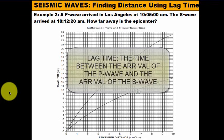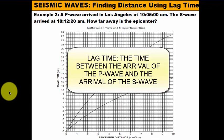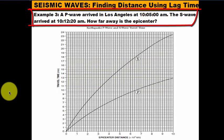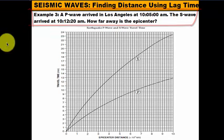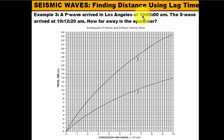Looking at example 3, it says the P-wave arrived in Los Angeles at 10:05 a.m. and the S-wave arrived at 10:12:20 a.m. How far away is the epicenter? When given time like this, the 10 is the hour, the 05 is the minutes, and the third value is seconds — so P-wave arrived at 10 hours, 5 minutes, 0 seconds. The S-wave arrived at 10 hours, 12 minutes, 20 seconds. The lag time between them is 7 minutes and 20 seconds.